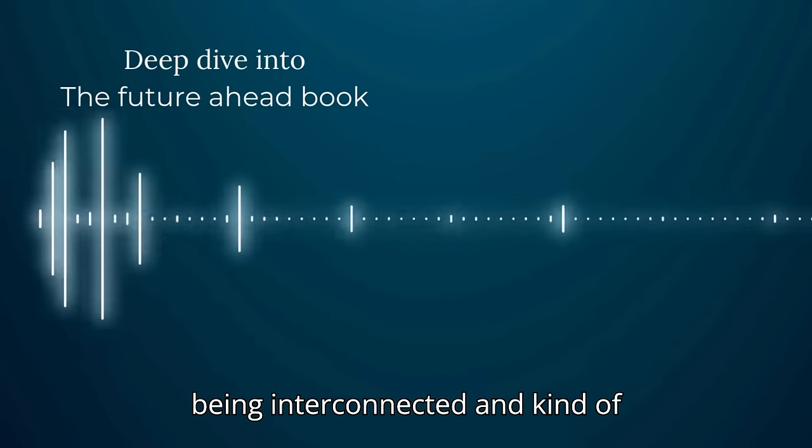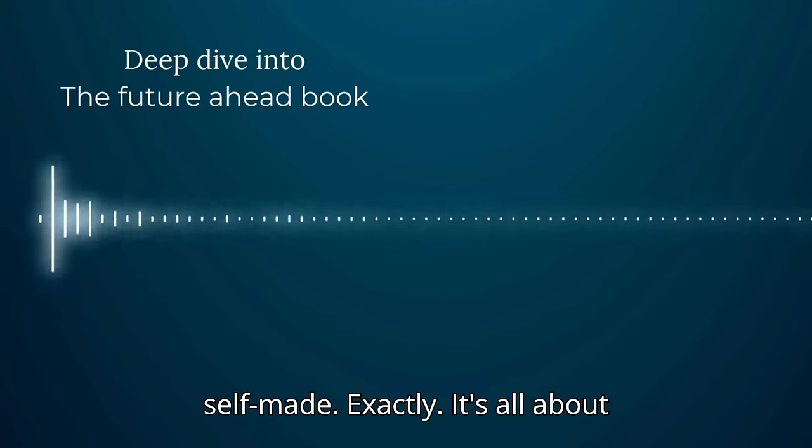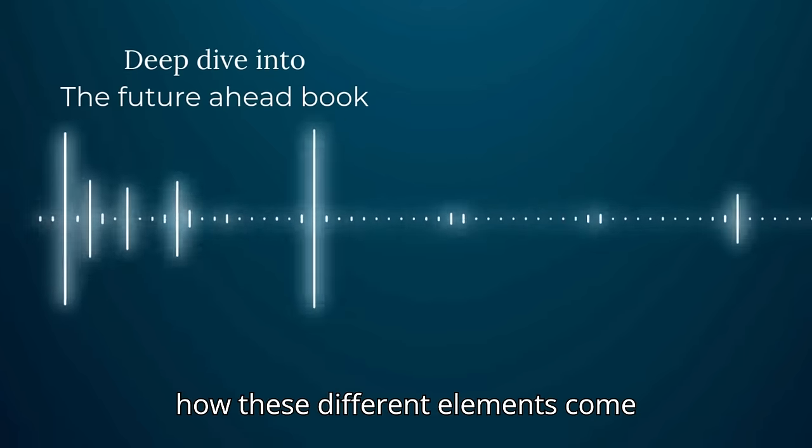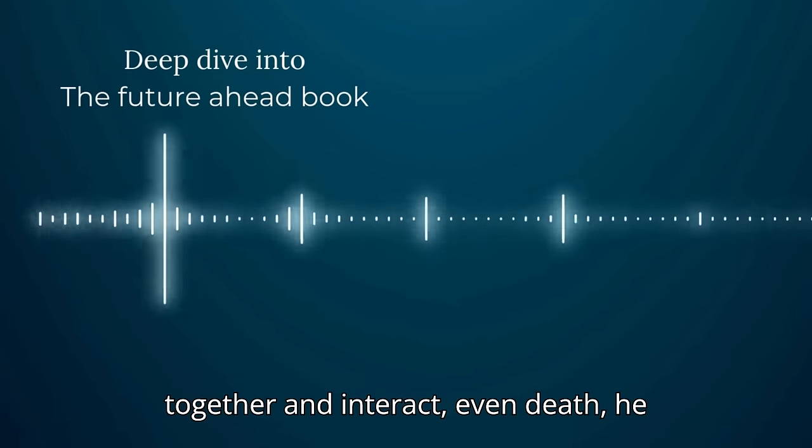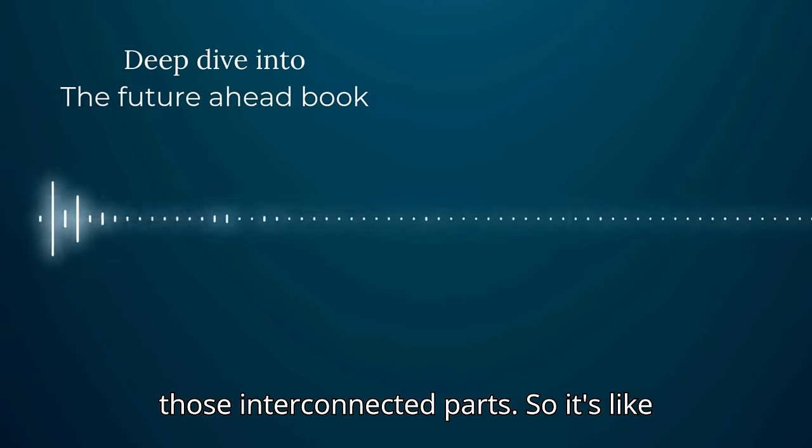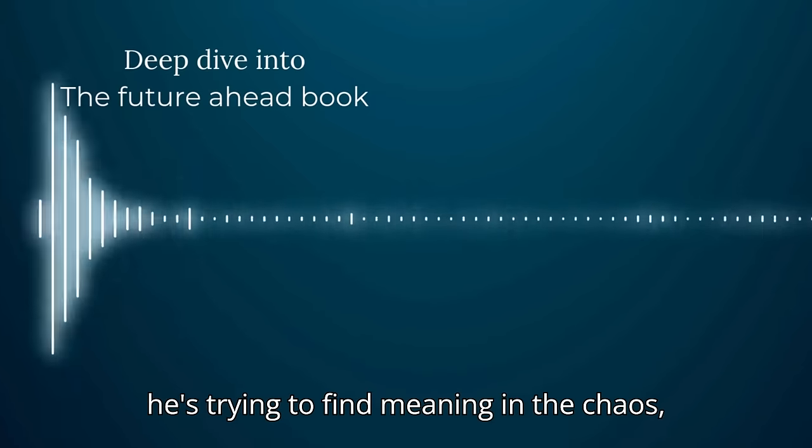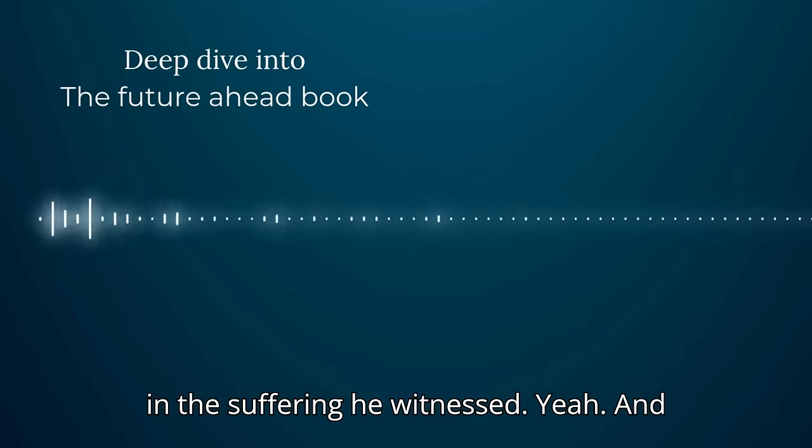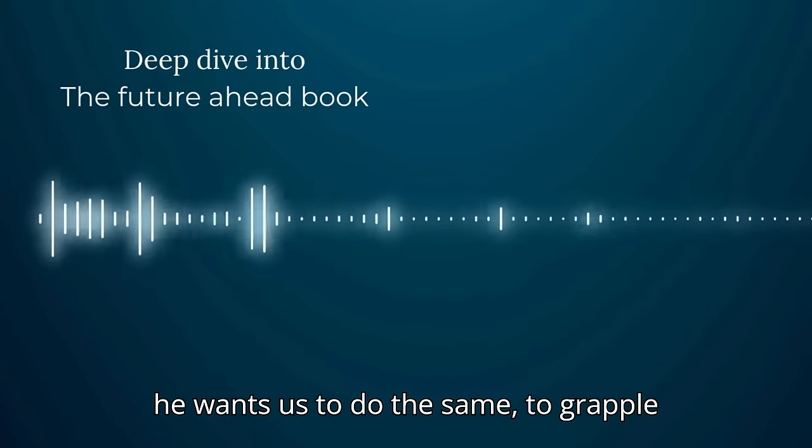So instead of the traditional idea of a god creating the universe, he talks about everything being interconnected and kind of self-made. Exactly, it's all about how these different elements come together and interact. Even death, he says, is just a natural separation of those interconnected parts. So it's like he's trying to find meaning in the chaos, in the suffering he witnessed.